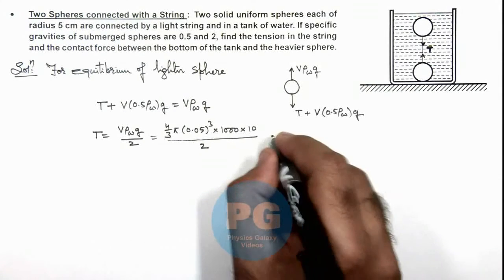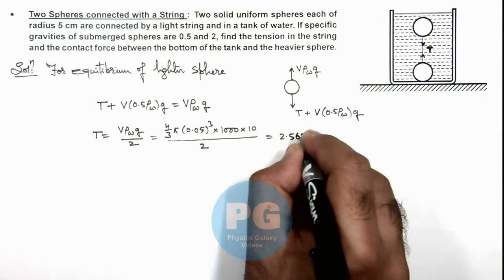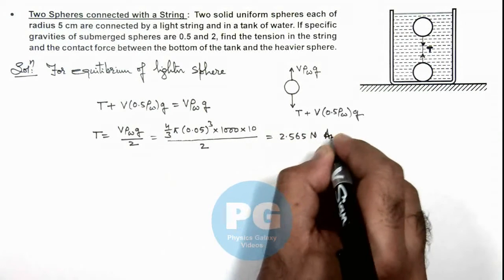And numerically when we solve it this gives us 2.565 newton that is one result of this problem.